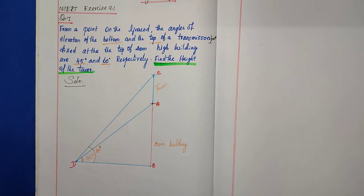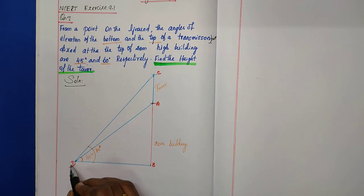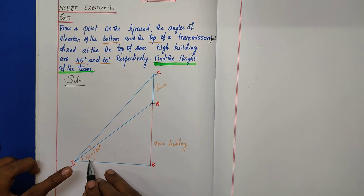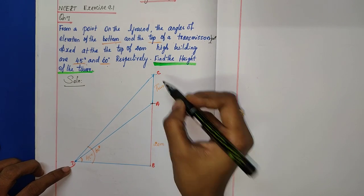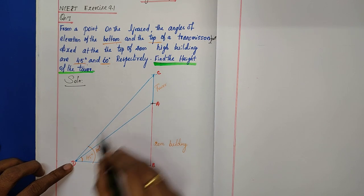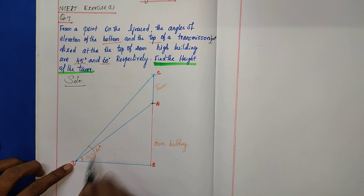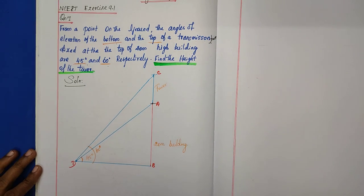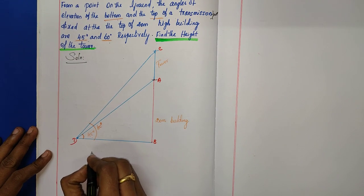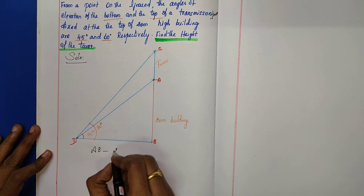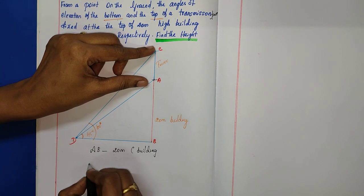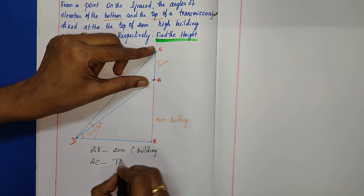We will use right angle triangles ABD and CBD. From triangle ABD, find tan 45 degrees, and from triangle BDC, find tan 60 degrees. Here AB represents the 20 meter building and AC represents the transmission tower.